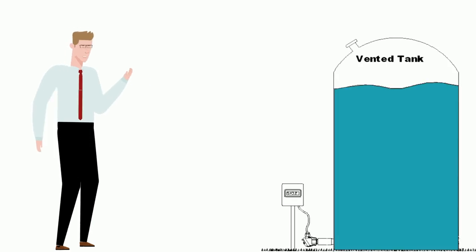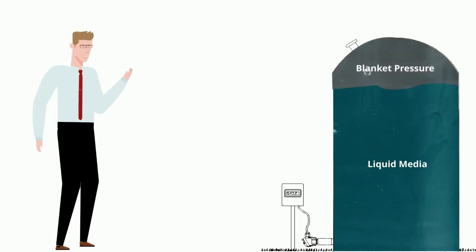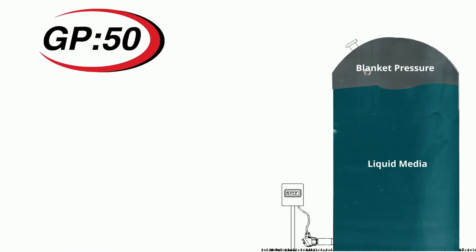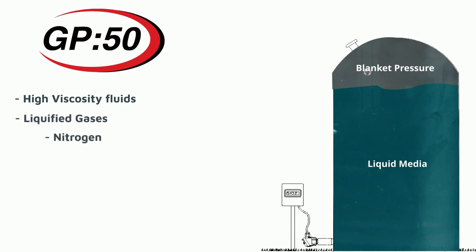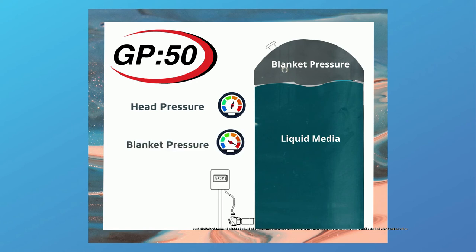At times the level in a pressurized tank is also required. A pressurized tank is used where the fluid has a blanket of air, nitrogen, or other gas on top of the liquid level. This blanket pressure may be used to help assist high viscosity fluids out of the tank, or used in liquefied gases such as nitrogen, oxygen, or other gases that create a high pressure blanket when in a liquid state. In order to determine the level in a pressurized tank with a hydrostatic type transmitter, a differential measurement is required. The sealed pressurized tank will exert a head pressure due to the depth of the fluid as well as add the blanket pressure that is on top of the liquid.